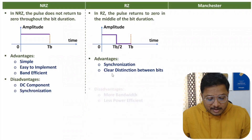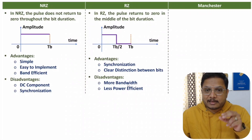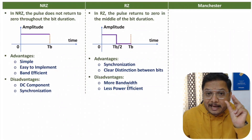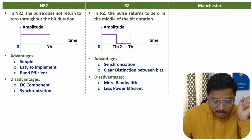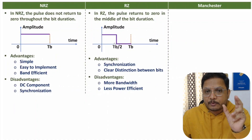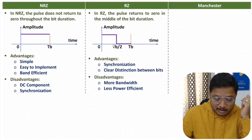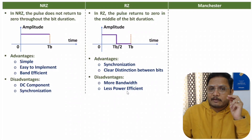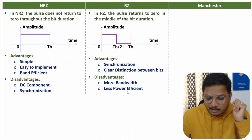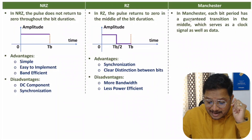The disadvantage of RZ is that it requires more bandwidth. In NRZ the pulse width is Tb, but in RZ the pulse width is Tb/2. Decreasing the width of the pulse means you need more bandwidth. RZ is also less power efficient.